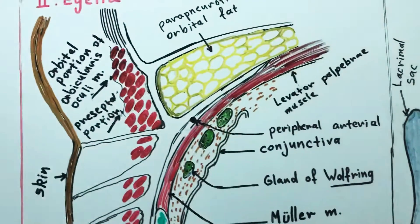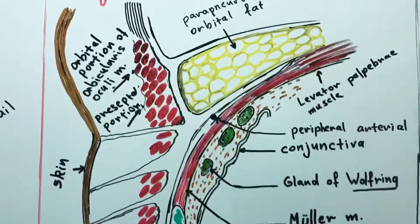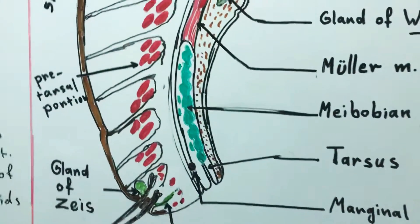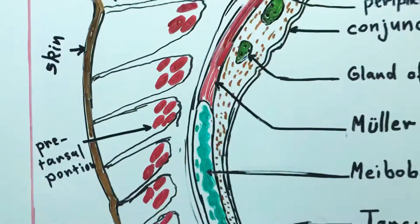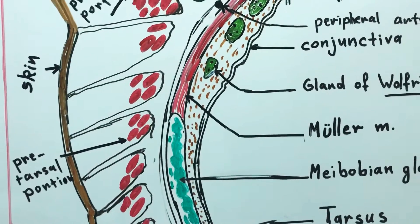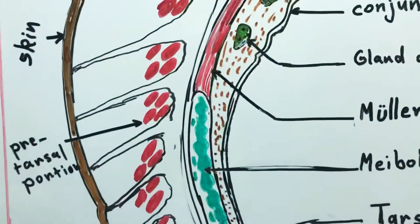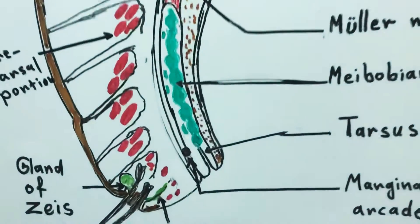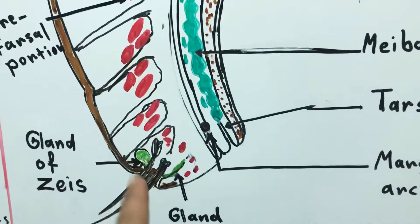Now, let's discuss those layers in detail. First of all, let's talk about the skin of the eyelid. The skin of the eyelid is one of the thinnest skin in the body. It involves sweaty glands and sebaceous glands and has more pigment cells.